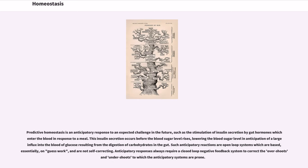Predictive homeostasis is an anticipatory response to an expected challenge in the future, such as the stimulation of insulin secretion by gut hormones which enter the blood in response to a meal. This insulin secretion occurs before the blood sugar level rises, lowering the blood sugar level in anticipation of a large influx of glucose into the blood resulting from the digestion of carbohydrates in the gut. Such anticipatory reactions are open-loop systems which are based essentially on guesswork and are not self-correcting. Anticipatory responses always require a closed-loop negative feedback system to correct the overshoots and undershoots to which the anticipatory systems are prone.